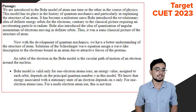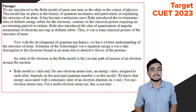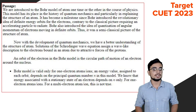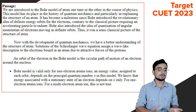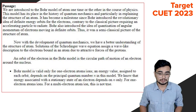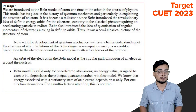With the development of quantum mechanics we have a better understanding of the structure of the atom. The solution of the Schrödinger wave equation assigns a wave-like description to the electron bound in an atom due to attractive forces of the protons. An orbit of the electron in Bohr's model is a circular path of motion around the nucleus. Bohr's model is valid only for one-electron atoms or ions.